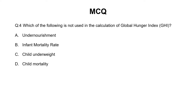The question is: which of the following is not used in the calculation of global hunger index? Options are: A) undernourishment, B) infant mortality rate, C) child underweight, D) child mortality.